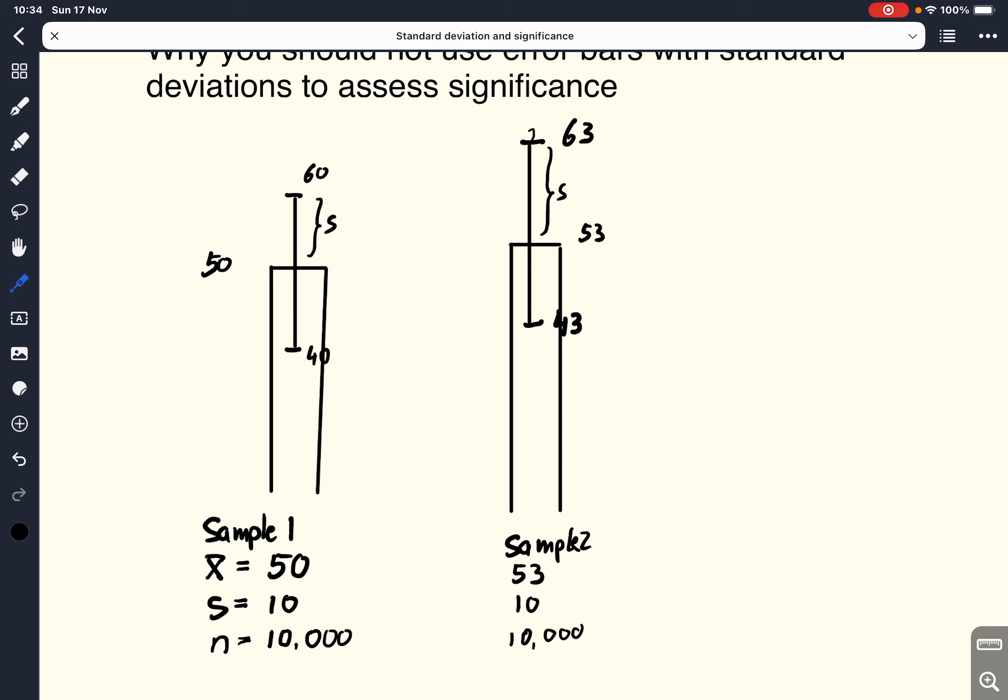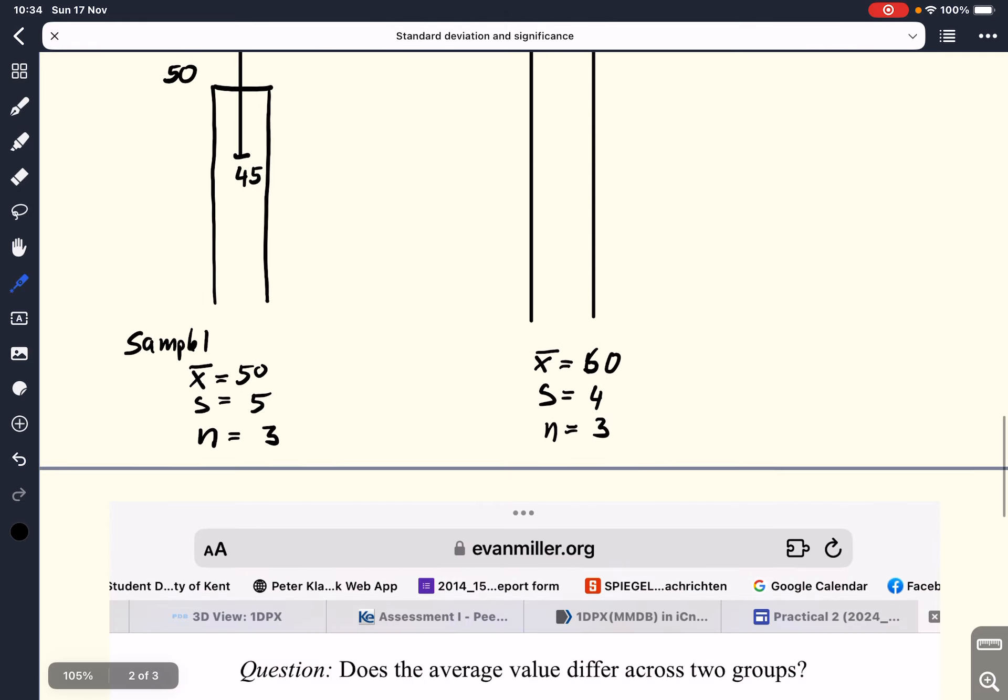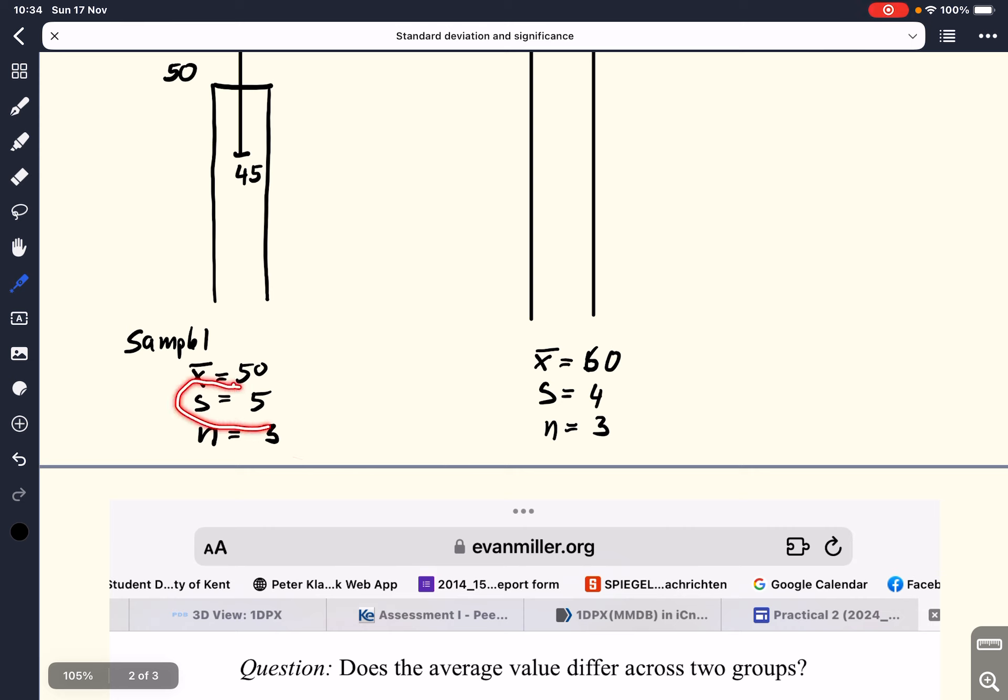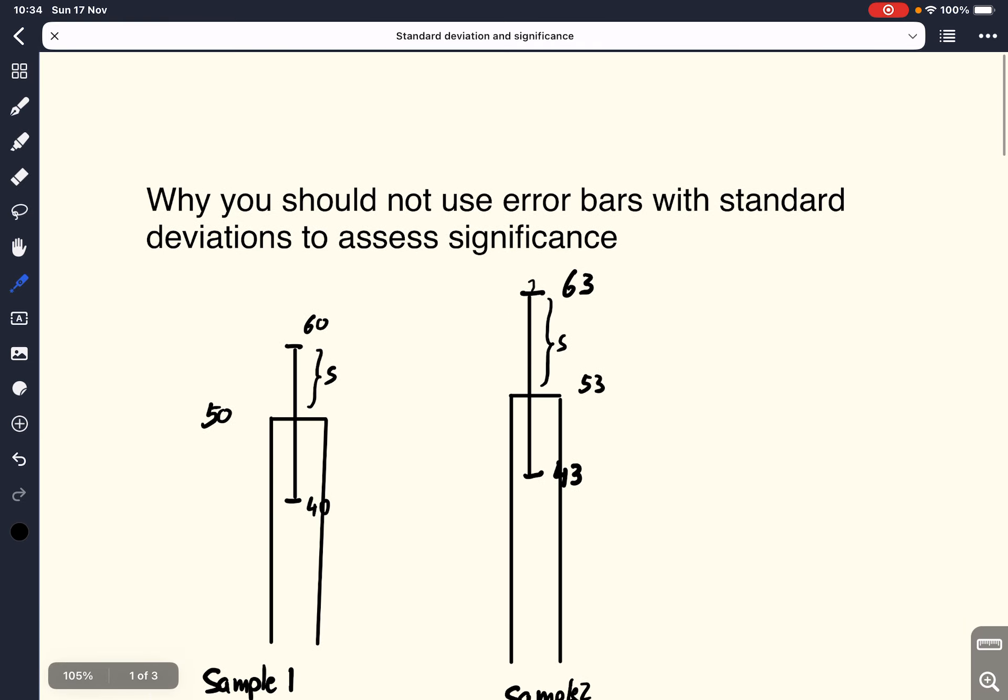The reason why this is the case is it depends on the sample size. Here, in our first example, we've got large sample sizes. Whereas in our second example, we've got very small sample sizes here. And the sample size has a massive impact on the outcome of the t-test in our t-statistics. But it is not reflected really in the standard deviations. So therefore, we should not use error bars with standard deviations if we want to make a judgment whether our two samples are statistically different from each other.